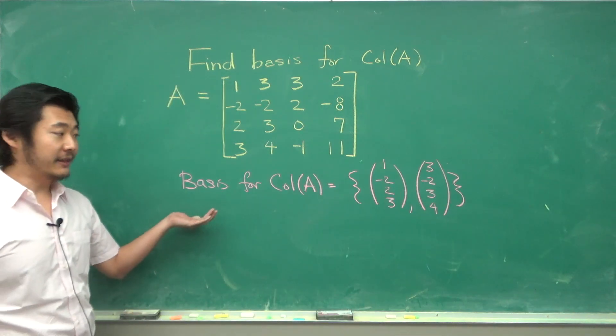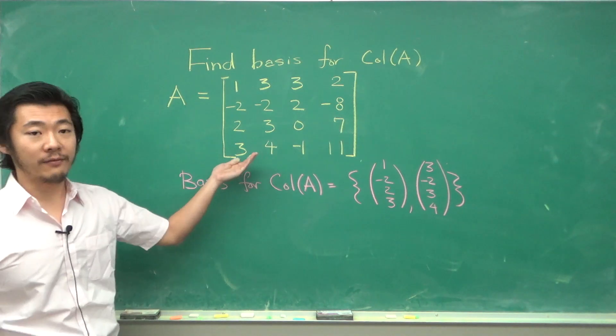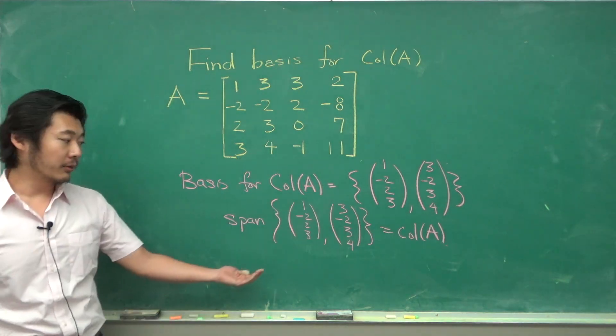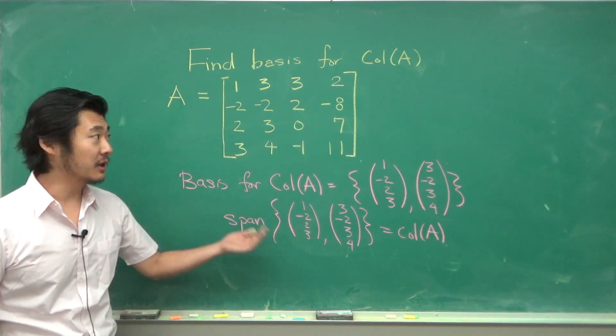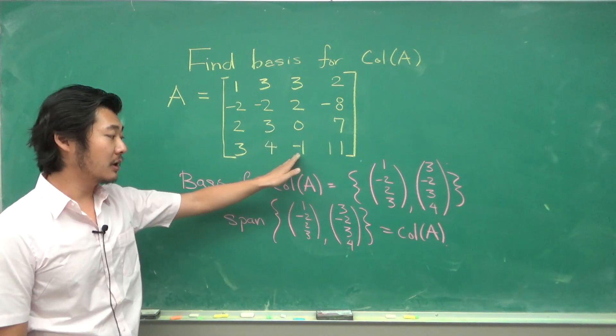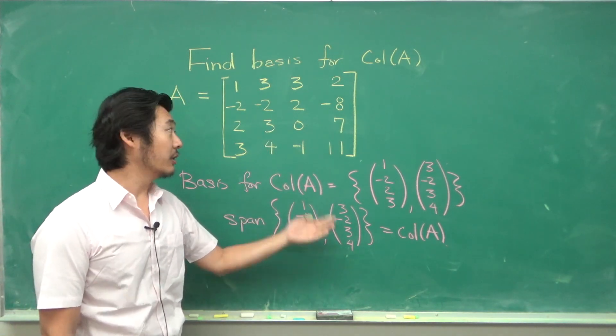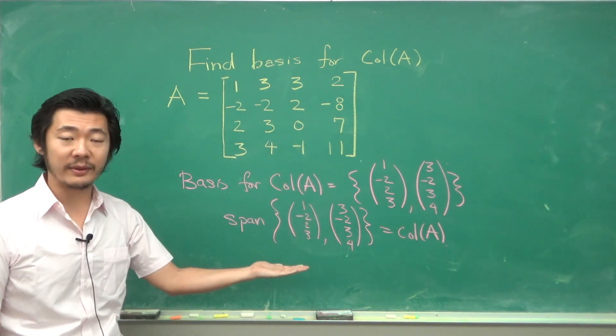So we get that the basis for the column space of A is the first two column vectors. That is all we need are these two vectors and they are linearly independent because they are pivot columns. And if we want to get the third column, well we know that we can write the third column as a linear combination of these two, so it will be in the column space of A.